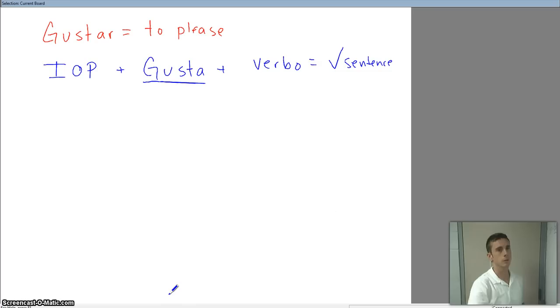Let's talk about the IOPs. We have five of them: me, te, le, nos, les. This should look really familiar as you look through here—I'm following the same pattern as we did with our subject pronouns when we conjugated the verb tener, the verb ser, and our AR verbs.